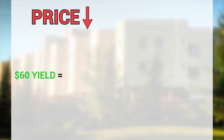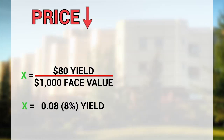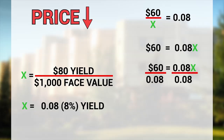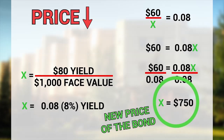The price has to go down so that the $60 of yield equals $80 over 1,000, or 8%. So that's 60 over X equals 0.08, or 60 equals 0.08X, or by dividing both sides by 0.08, you get $750. That is the new price of the bond after the Fed's rate hike caused corporate bond rates to go from 6% to 8%.